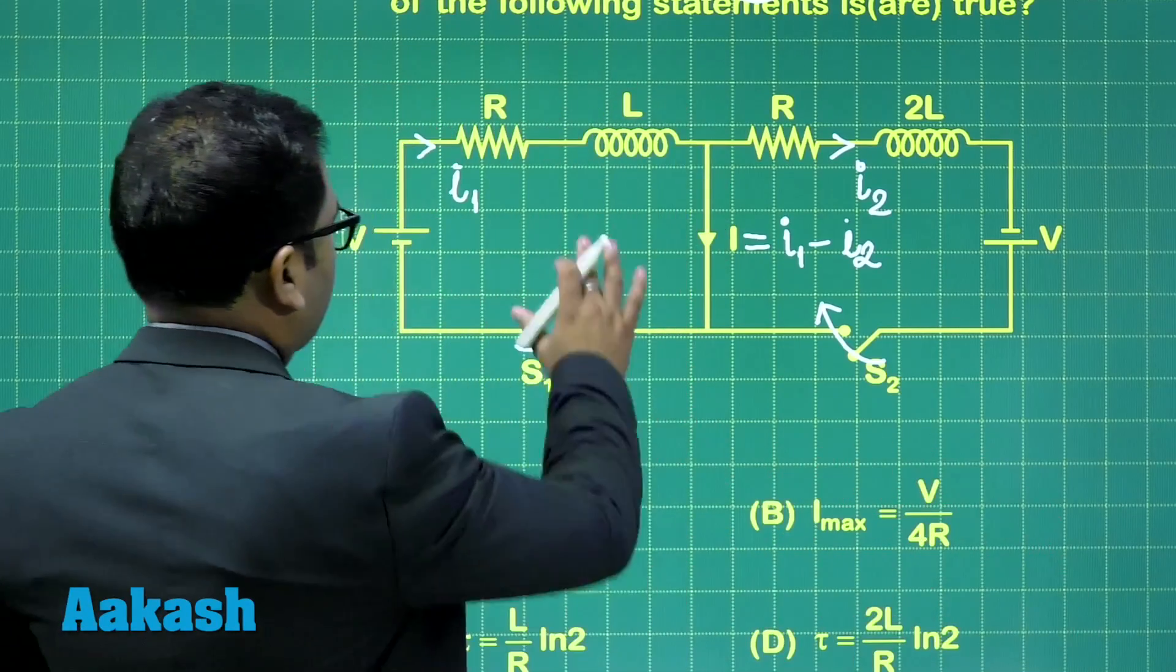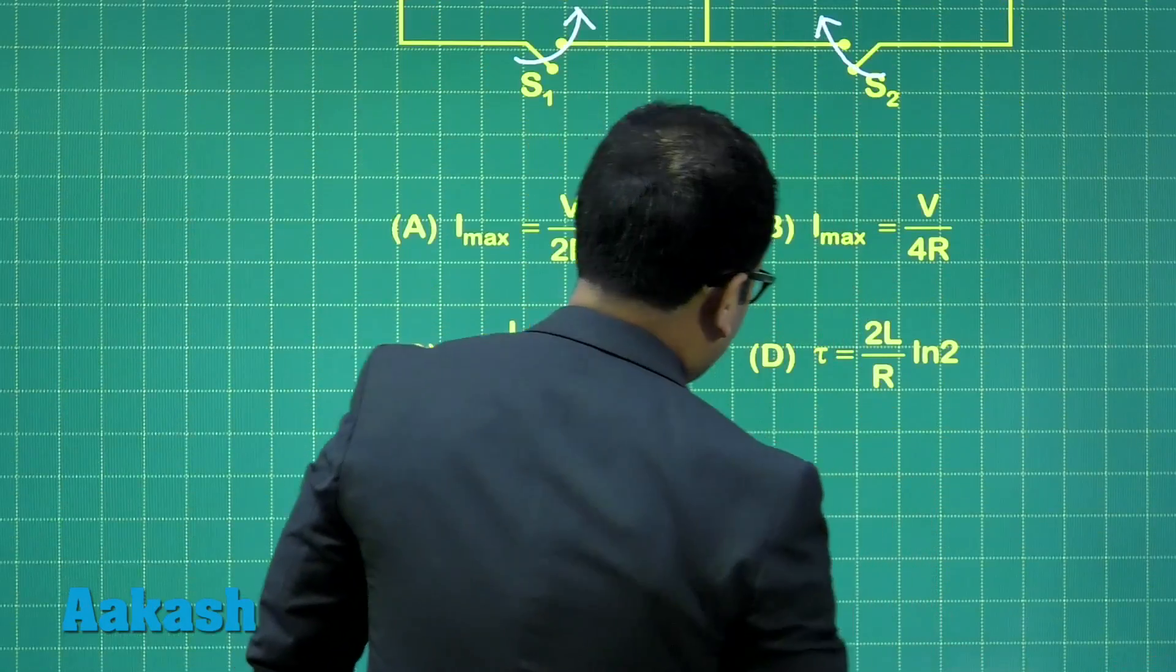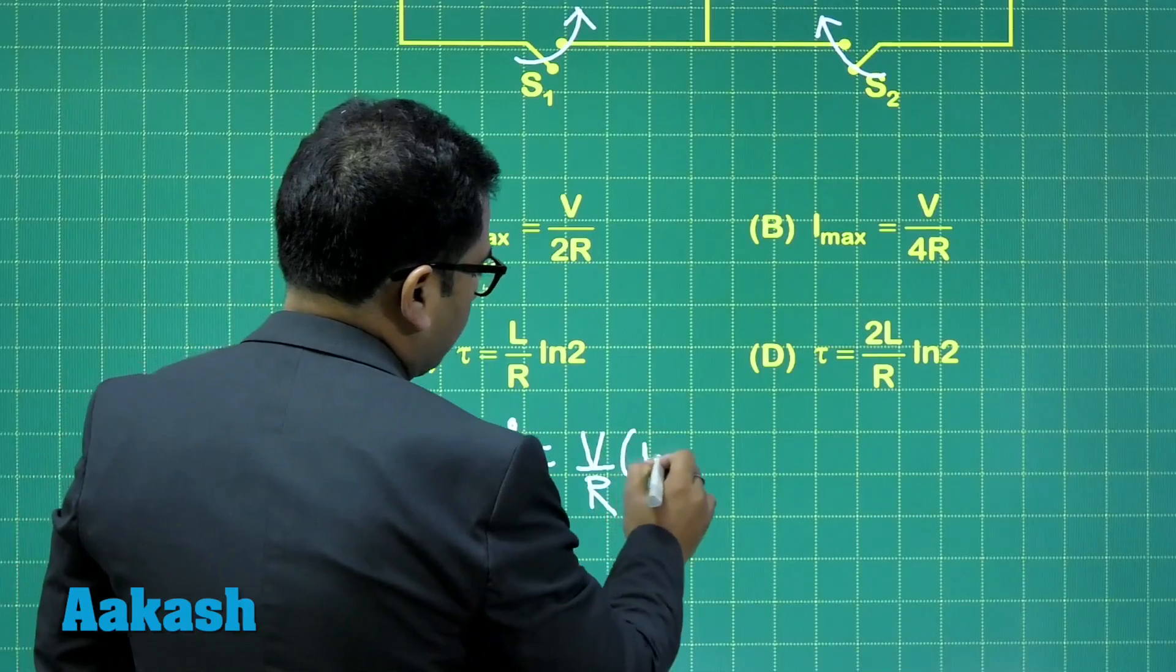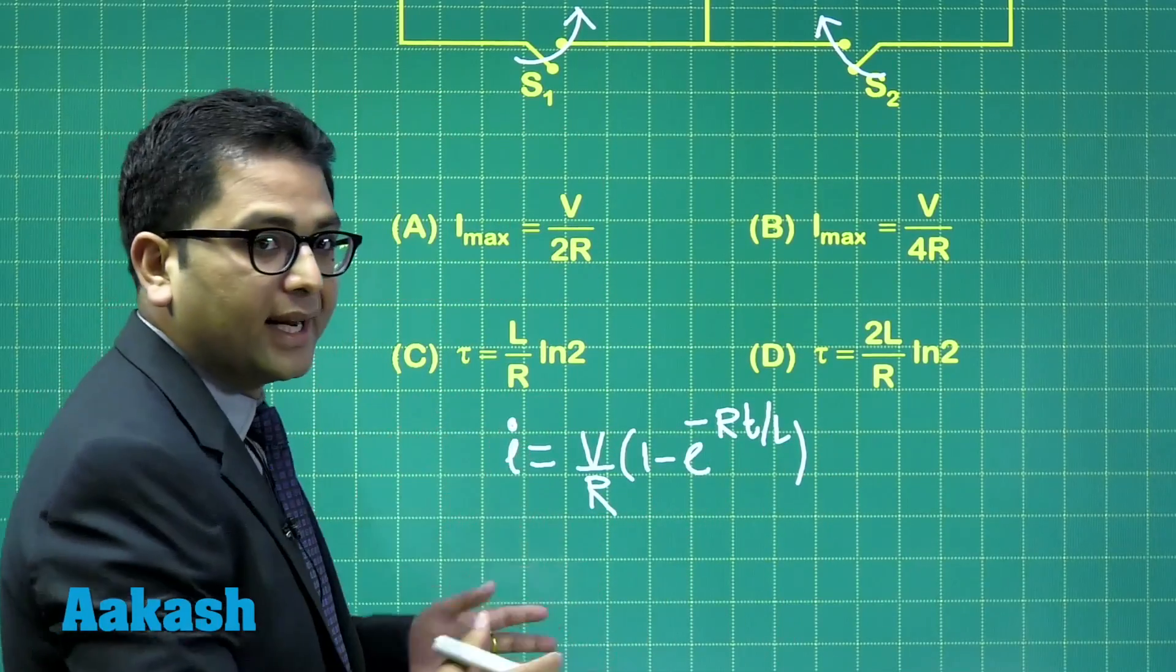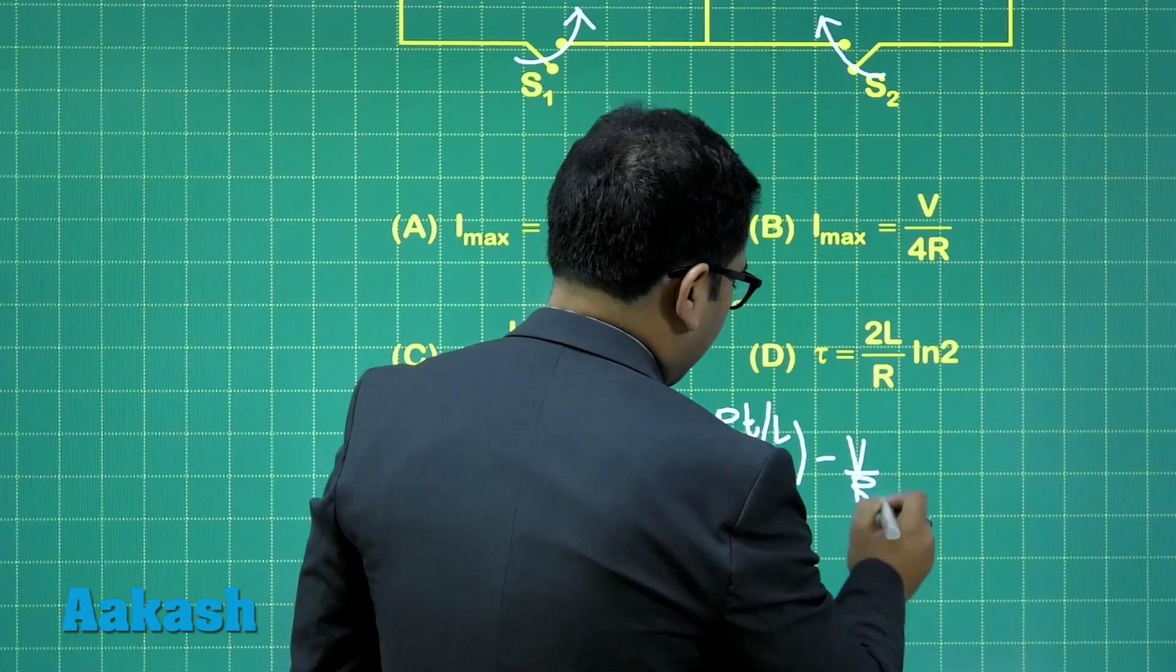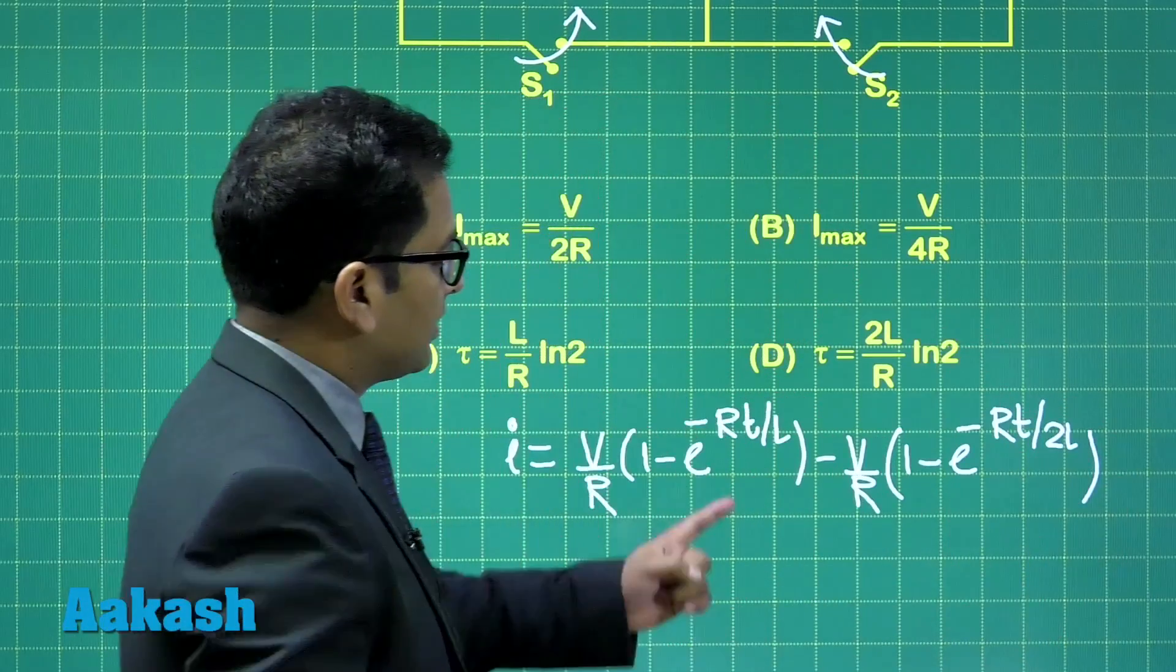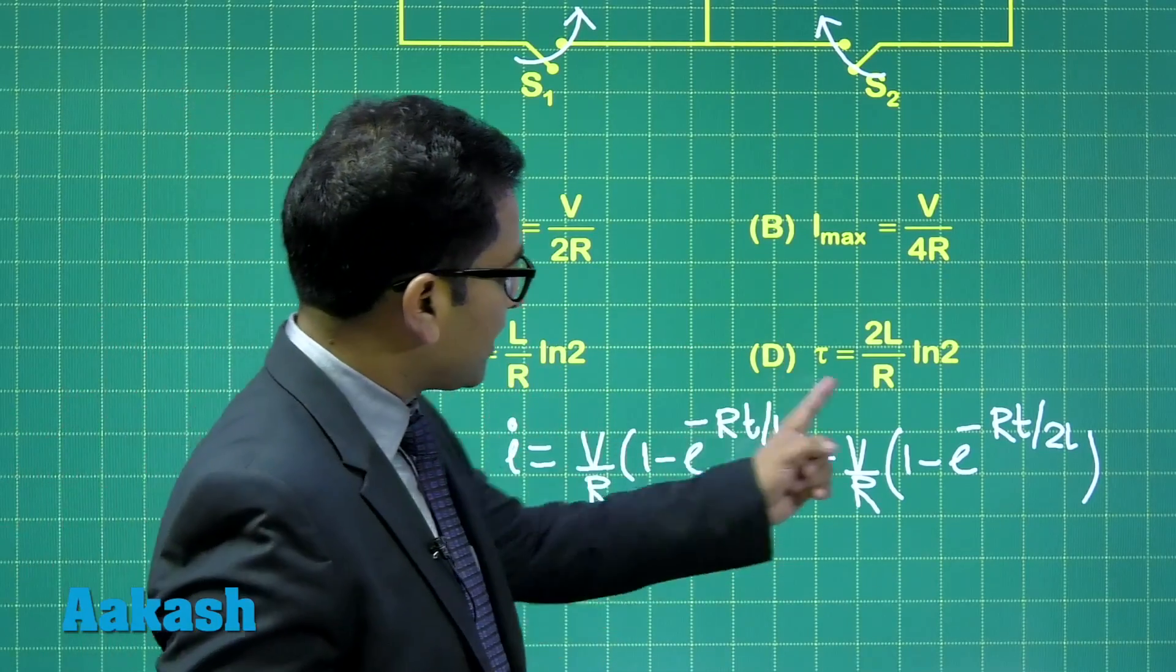This is quite simple. I1 is a regular one, I2 is also regular. I equals I1 minus I2. I1 is going to be V by R times (1 minus e raised to the power minus RT upon L). I2 would be V by R times (1 minus e raised to the power minus RT by 2L) because the inductance there is 2L. The first part would get cancelled.